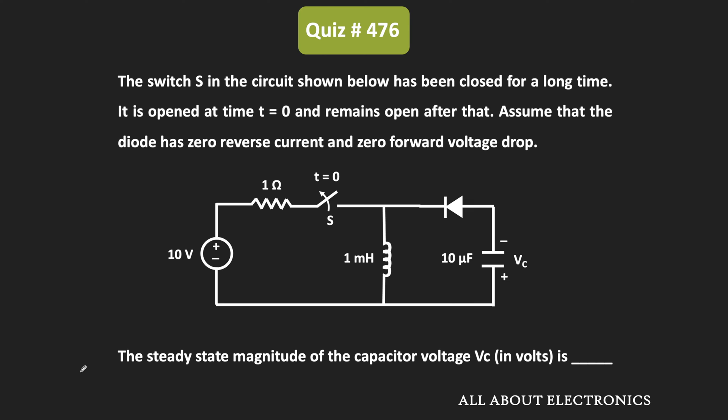We have been asked to find the steady-state magnitude of the voltage across the capacitor. We have also been given the condition for the diode — the diode has zero reverse current, and the forward voltage drop across the diode is also equal to 0. So now let us find the voltage across the capacitor in the steady-state condition.